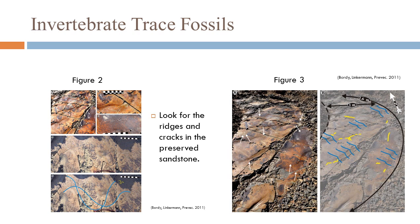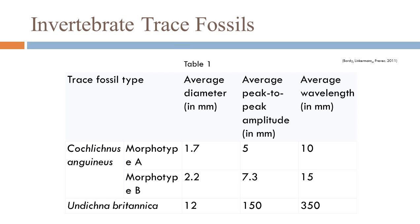Figures 2 and 3 show the ridges and cracks that are preserved in the sandstone. These are the trace fossils that the organisms made as they moved along. Notice how in figure 3A versus 3B the cracks and ridges are highlighted. Table 1 shows the diameter, amplitude, and wavelength of the trace fossils left behind by the two different types of organisms found at the site.